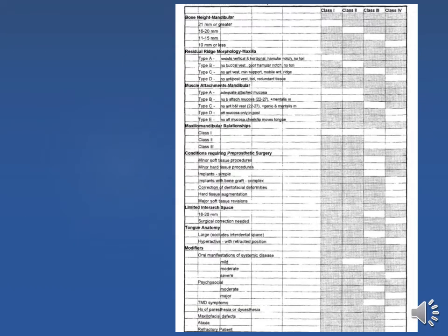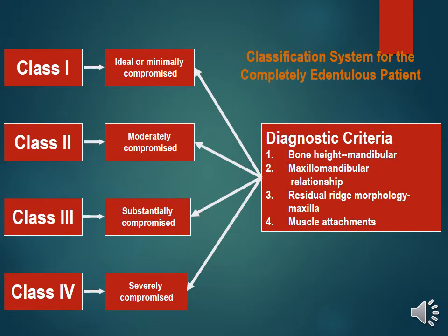The case assessment for each patient follows class 1, class 2, class 3, and class 4 criteria. The diagnostic criteria include bone height for the mandibular arch, the maxillomandibular relationship, the residual ridge morphology for the maxillary arch, and muscle attachments. Class 1 is ideal or minimally compromised; class 2 is moderately compromised; class 3 is substantially compromised; and class 4 is severely compromised.